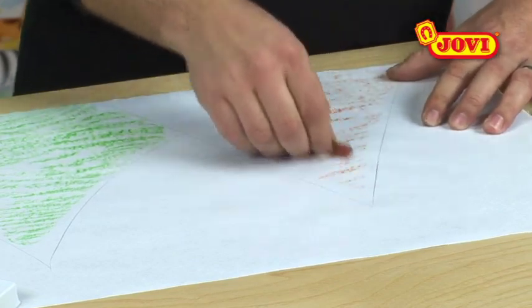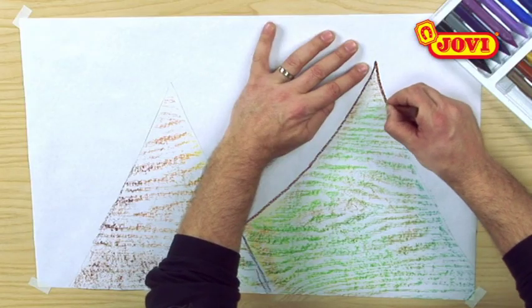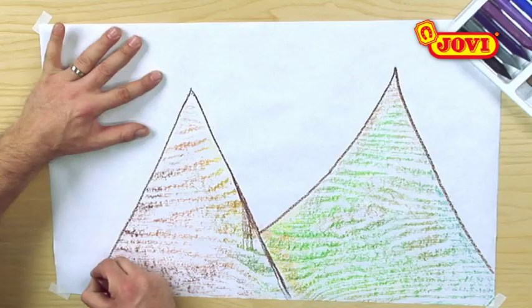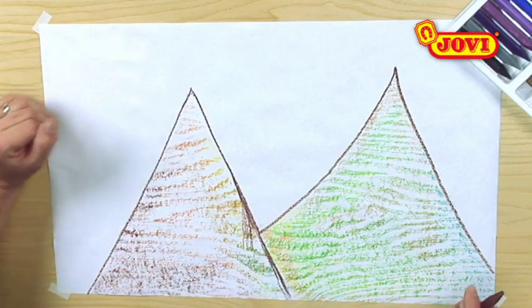Using wax crayons, each pupil then colours in part, taking care not to go over the lines. We then go over the silhouette of the mountains again to highlight our drawing and to conceal the pencil line.